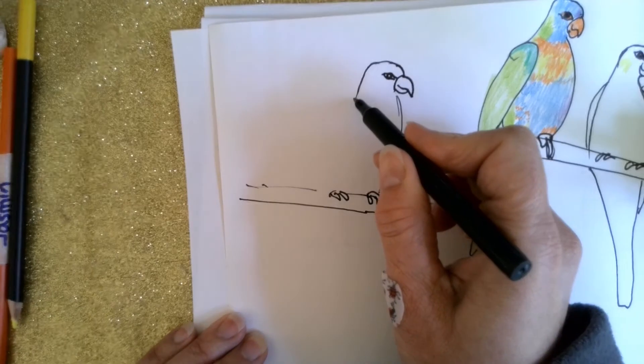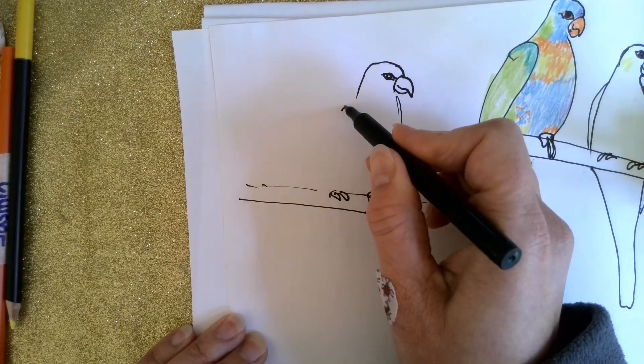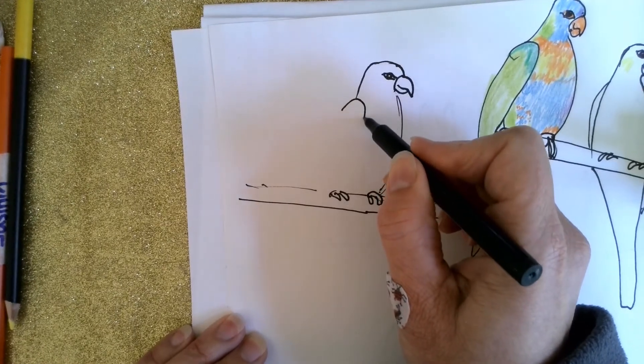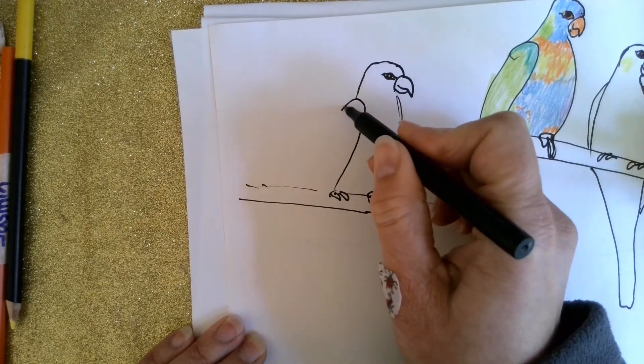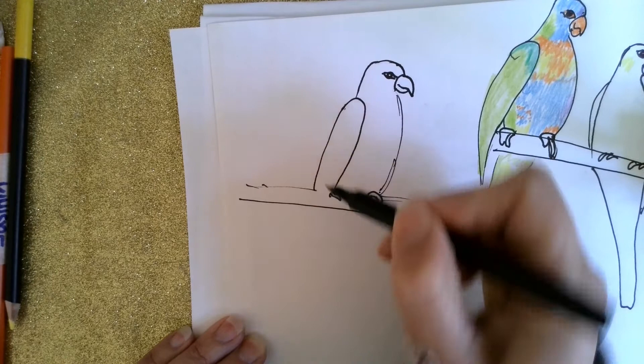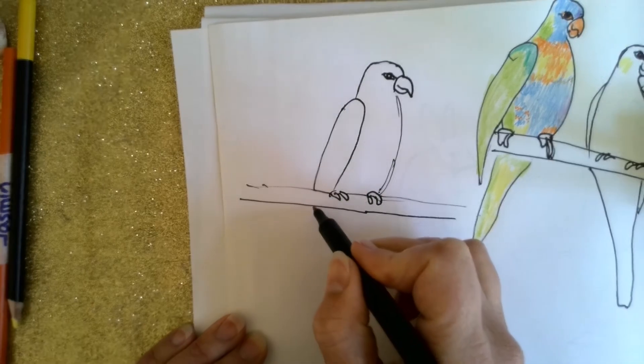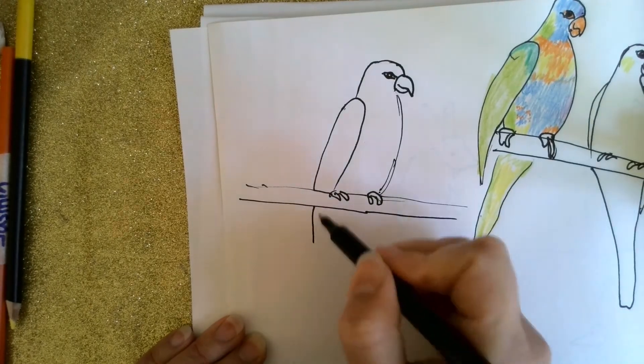Okay, now from here we're going to do the wings. So we're going to do a line that curves over and comes down, stop at the branch, and then it can come down behind the branch too.